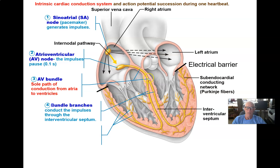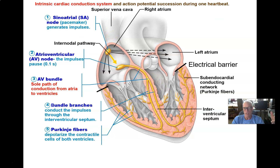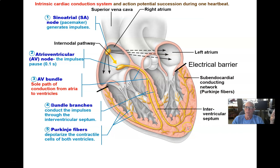The wave of depolarization spreads to the bundle branches — the right and left bundle branches — and then finally to the Purkinje fibers, which are branching fibers that insert the action potential into the heart muscle at strategic locations. That's called the intrinsic conduction system. This controls the pattern of depolarization in the heart muscle cells to produce efficient pumping — starting the wave at the apex of the heart to pump blood up and out of the ventricle. The wave goes from apex to base.